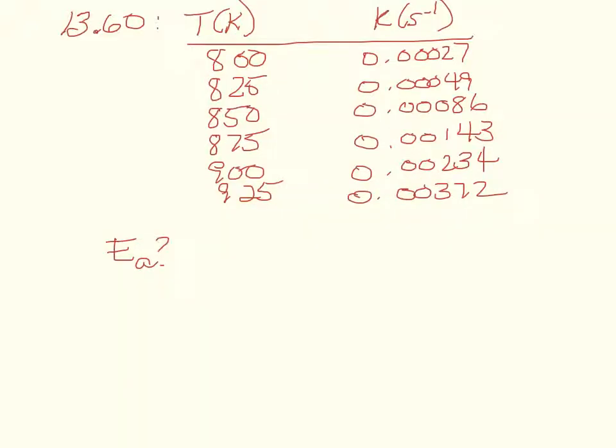So problem 13.60 in the back of your book talks about a chemical reaction and said data was gathered concerning the temperature in Kelvin and the rate constant for this reaction. And it asks for the activation energy. Well the first thing to realize is anytime they ask for activation energy, you need to think about Arrhenius equation.